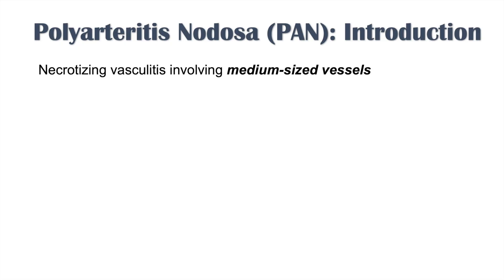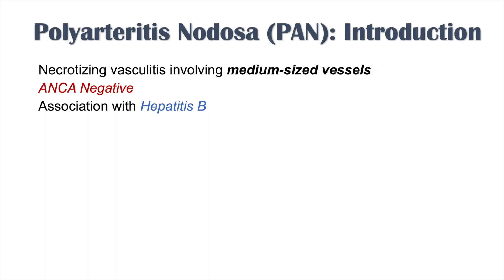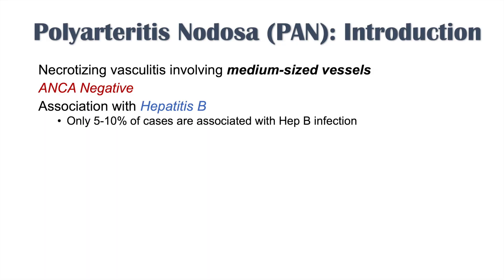PAN is a necrotizing vasculitis involving medium-sized vessels — necrotizing vasculitis of medium-sized vessels. It is an ANCA-negative condition and it is associated with hepatitis B infections. However, it's only about 5 to 10 percent of cases that are associated with hepatitis B, so the association exists but it's not necessarily a strong one.